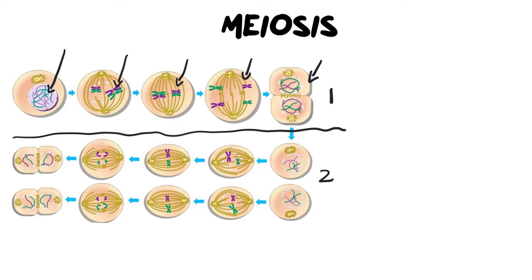At the end of meiosis 1 you should have two cells, and at this point they must have halved the chromosome number. So if we started with four chromosomes in this cell, we now end with two chromosomes in each of the two cells, which you can see in anaphase and telophase.